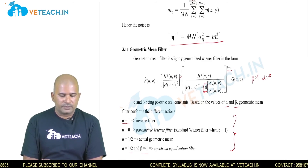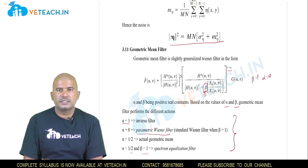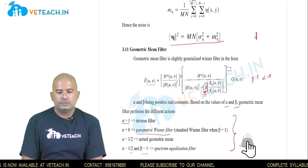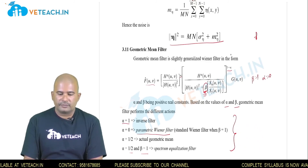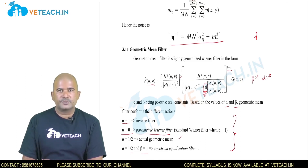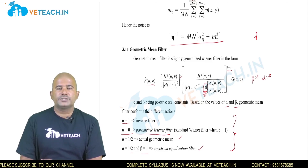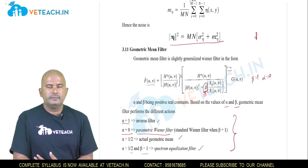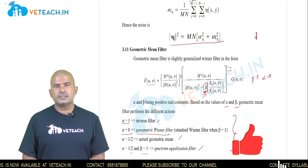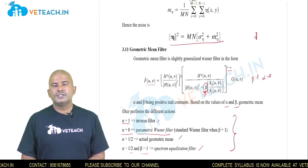Based on different values of alpha and beta we can choose different variations. In the parametric Wiener filter, fine tuning of beta is similar to fine tuning of gamma in the constrained least square filter. The geometric mean filter is a generalized version of the Wiener filter; we can deduce the Wiener filter by selecting alpha equals 0 and beta equals 1. The spectrum equalization and inverse filters are also derived from this. These are the different filters — normal, order statistic, adaptive, Wiener, constrained least square, and geometric — discussed in this chapter for image restoration and reconstruction. Thank you.